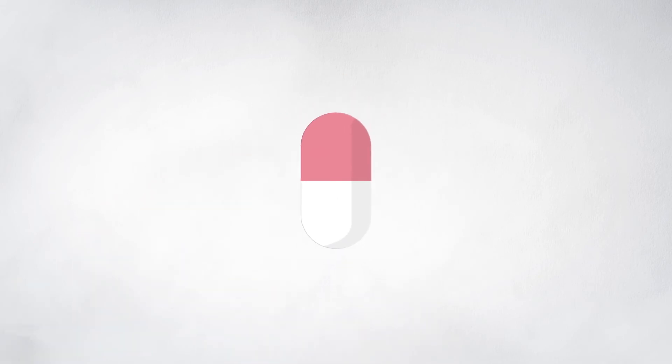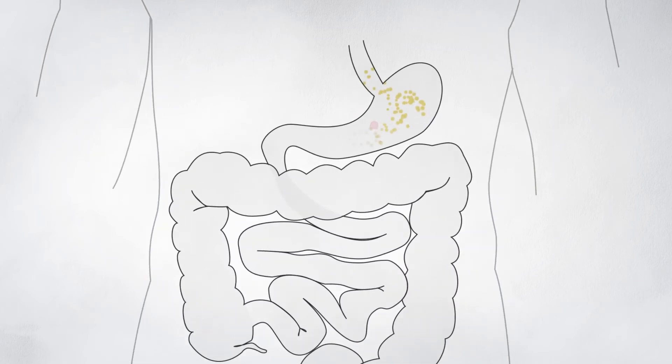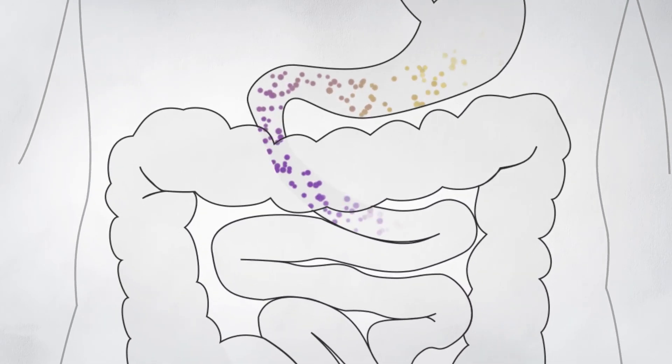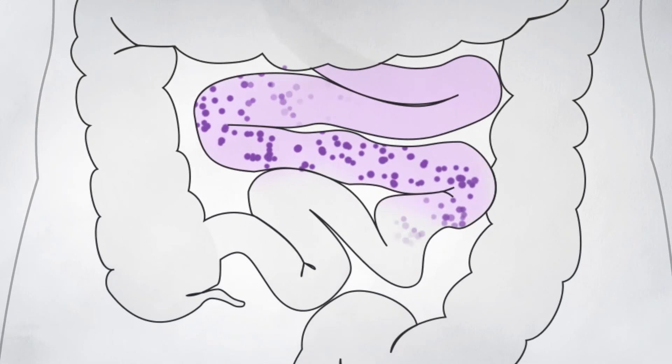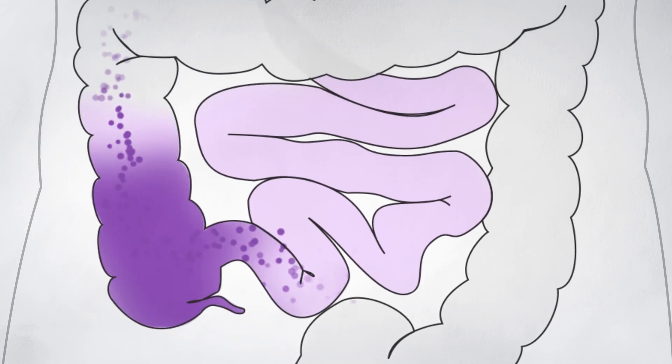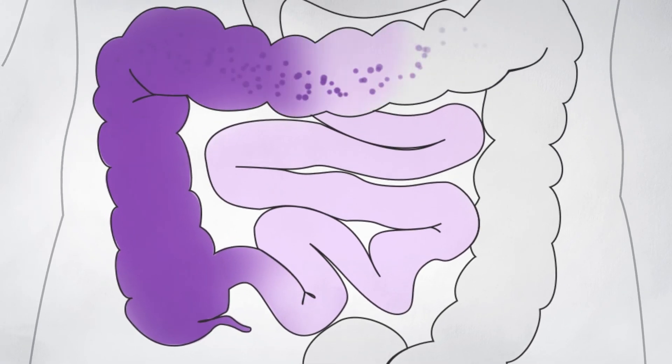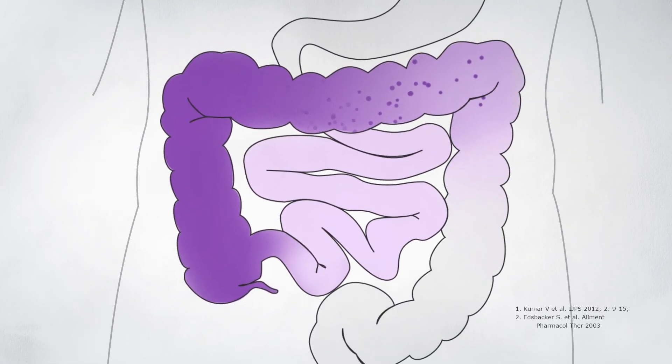Let's follow a capsule from the stomach and observe the ECX controlled release technology in action. In the stomach, the capsule dissolves releasing the pellets. As the pellets travel along the small intestine, the enteric coating starts to dissolve. In the ileum, the ascending colon, and transverse colon, the active ingredient is slowly released.